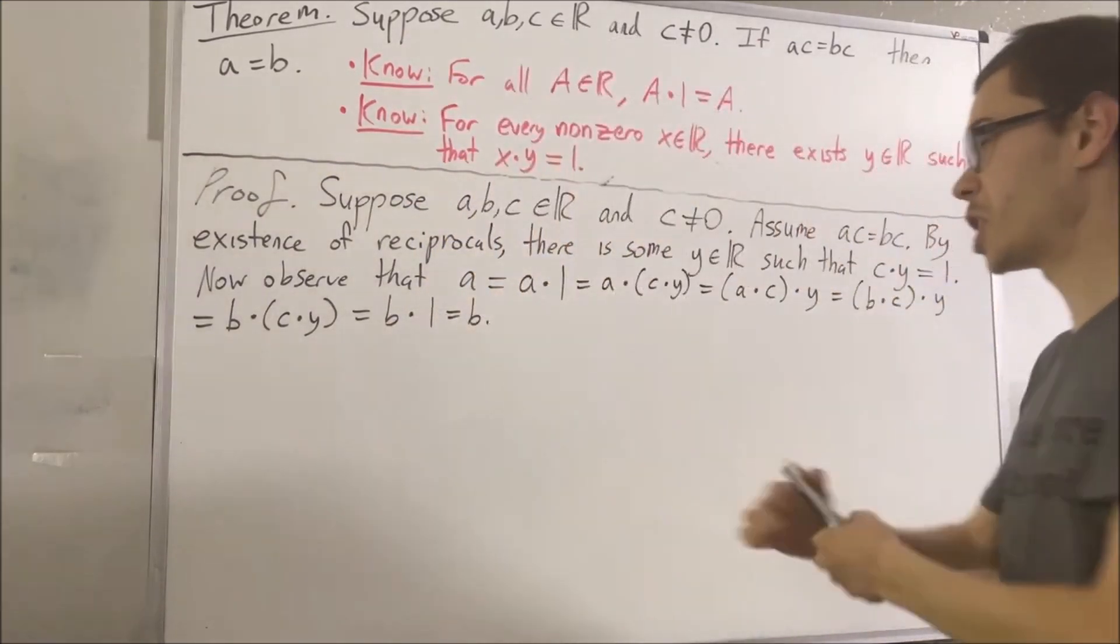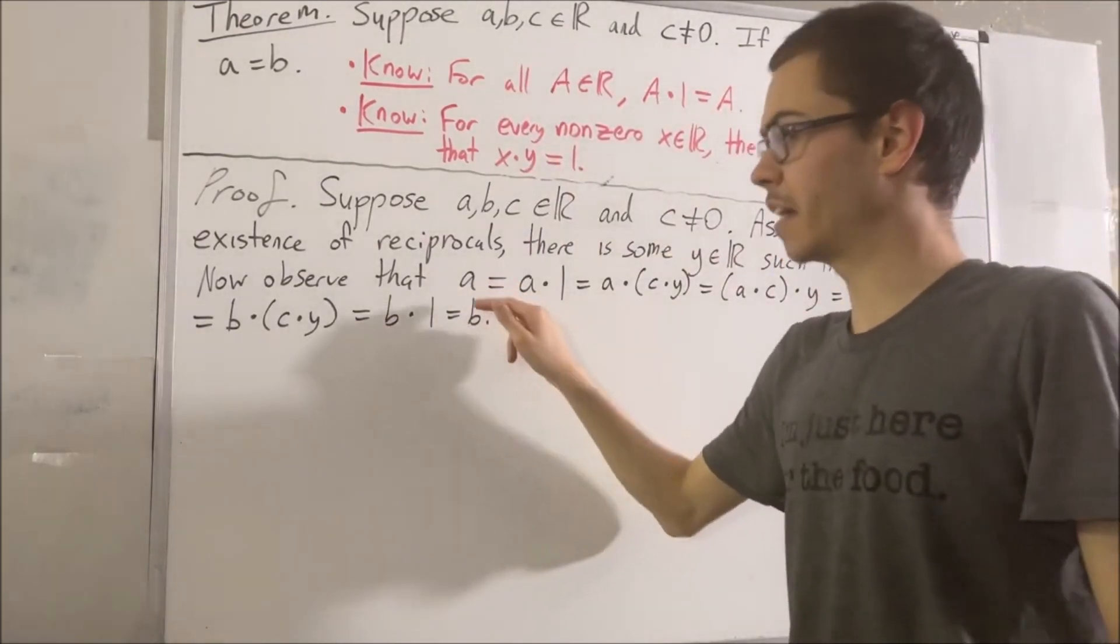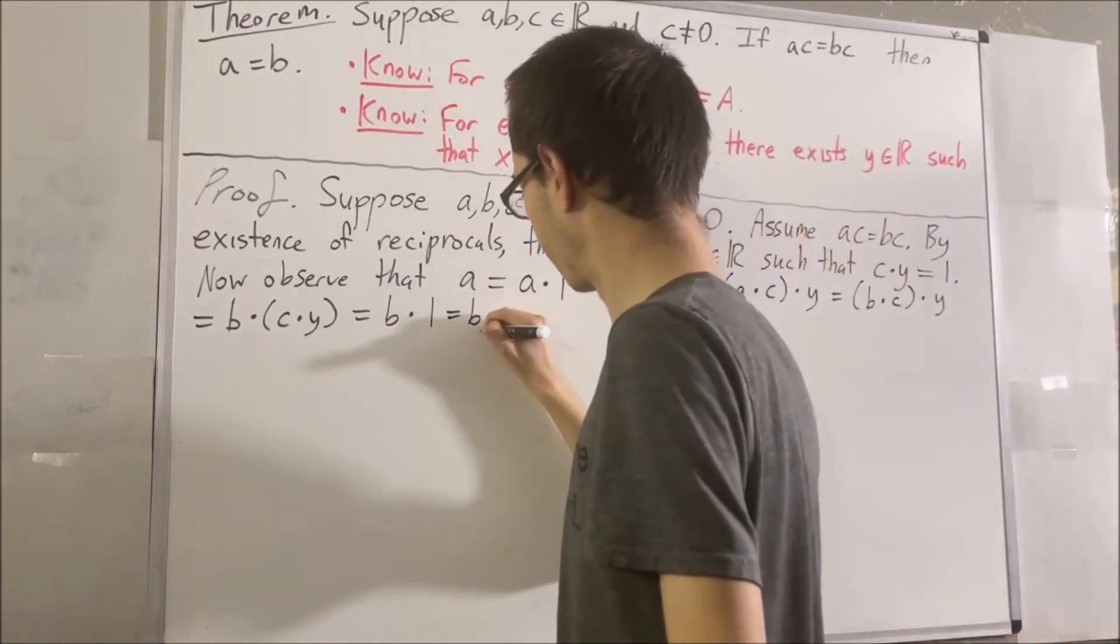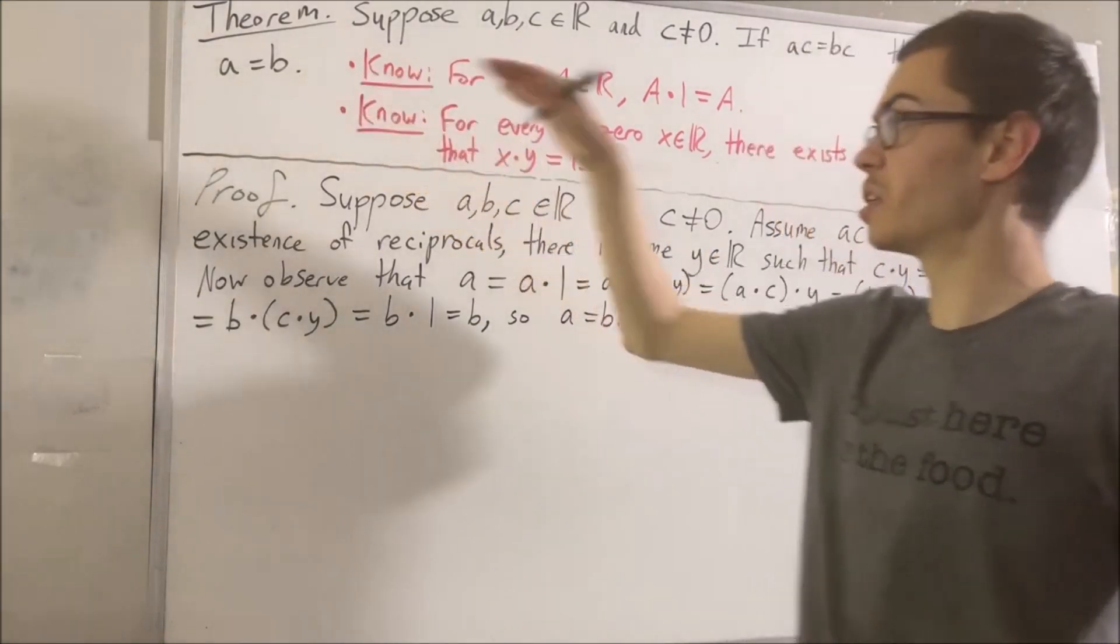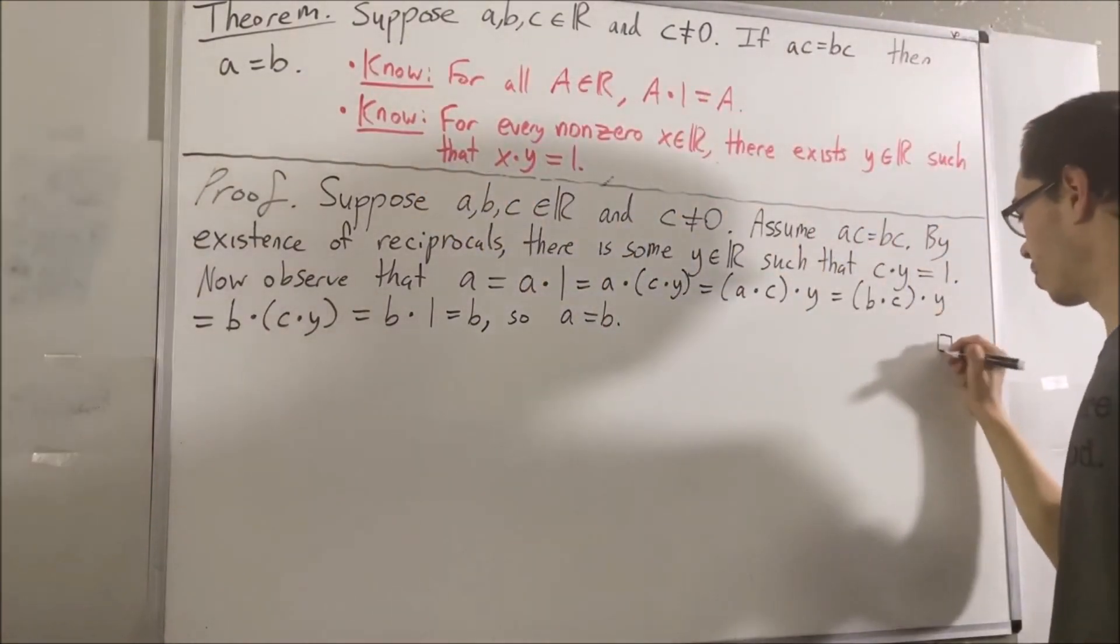So, we have a chain of equalities showing that A is equal to B. And, that's exactly what we wanted to deduce. This completes the proof.